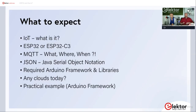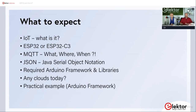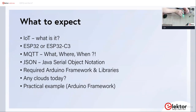What is IoT? That's something we should briefly talk about. If you say 'IoT' it can mean many things. We'll also cover what the ESP32 and ESP32 C3 are, their differences and similarities, what MQTT is, what JSON — JavaScript Object Notation — is, and why it's used in IoT, as well as the required Arduino framework and libraries.